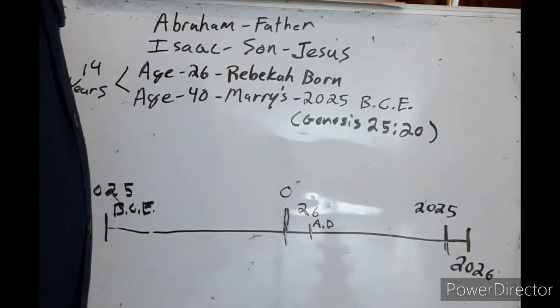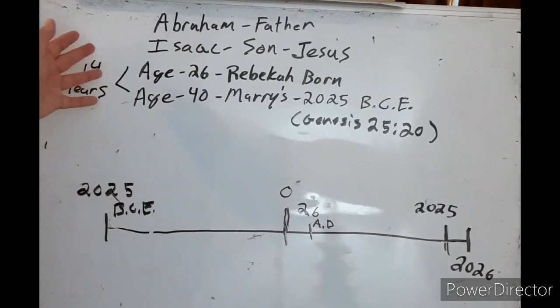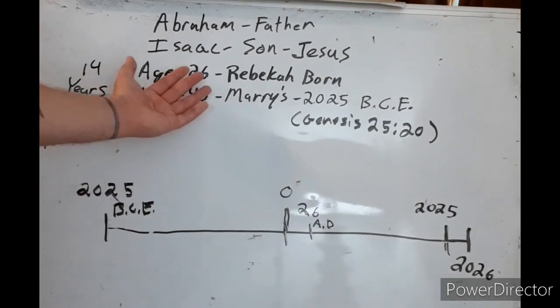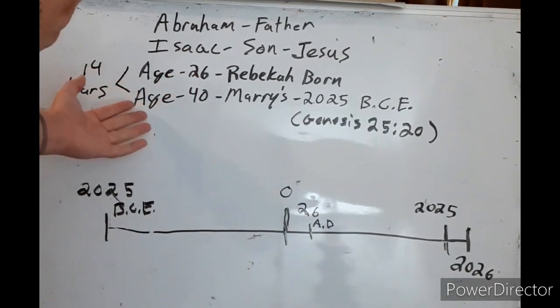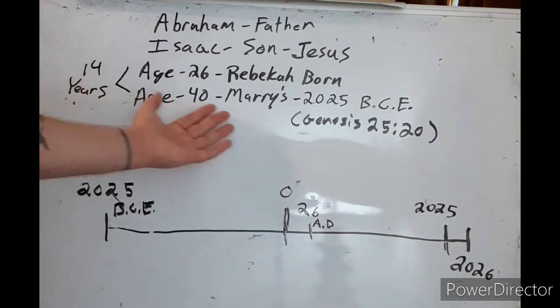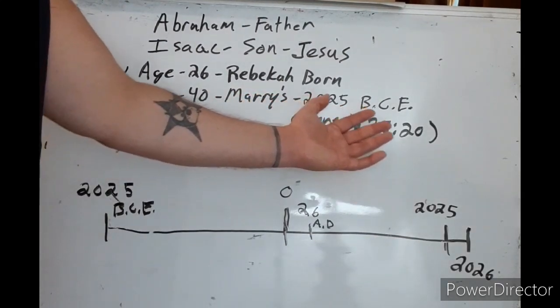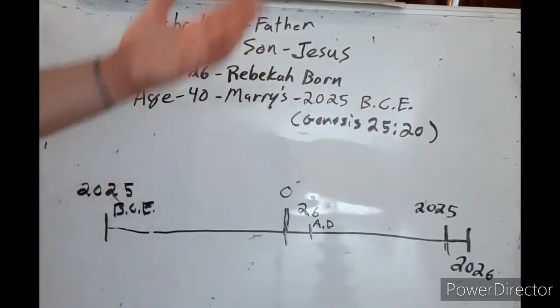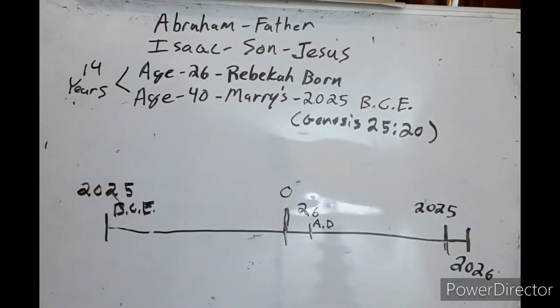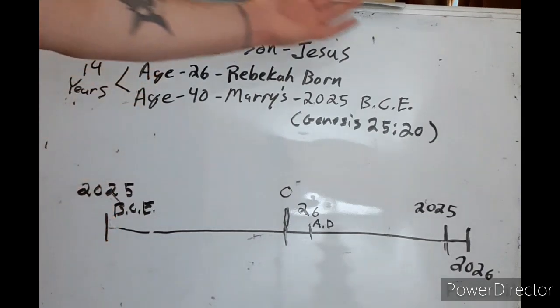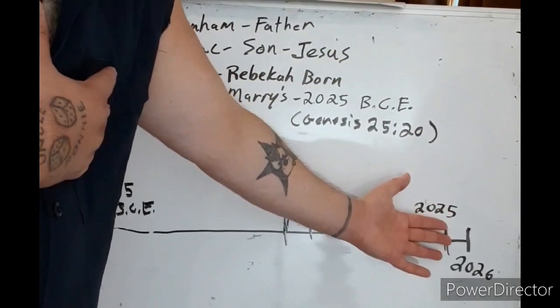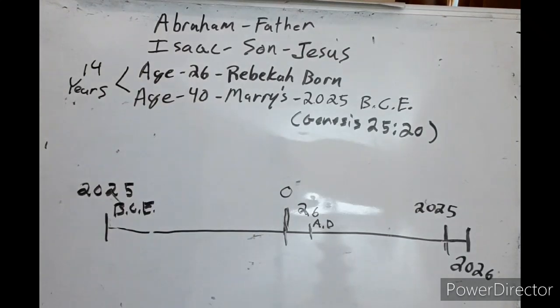That's the beginning of the end. So you see how all these ages are telling us the last days here. And another thing that I showed you is that he married Rebecca in 2025 BCE. See, now that's our rapture—2025 BCE he married Rebecca, 2025 AD we get married.